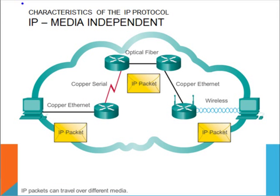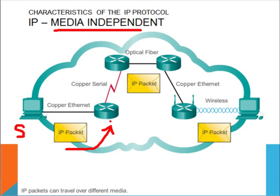The next characteristic of the IP protocol is what we know as media independence. From the transmission side, the sender sends the packet into the network, and as the packet passes through, it will pass through different types of cables such as Ethernet cable, serial cable, optic fiber cable, or even a wireless network. In short, it will travel through many different kinds of physical network media in order to reach the destination.